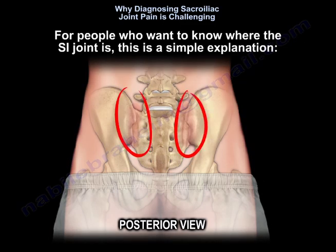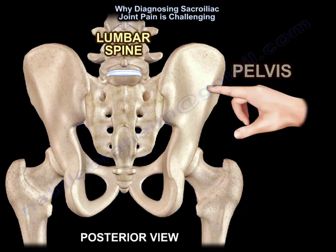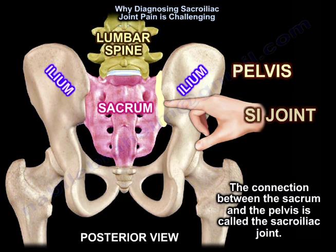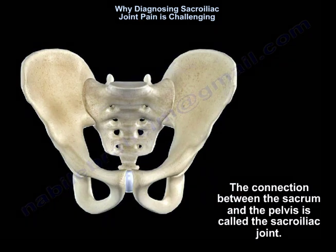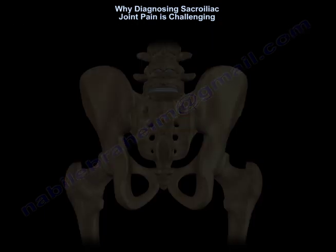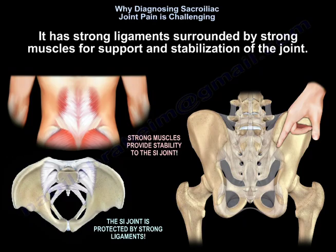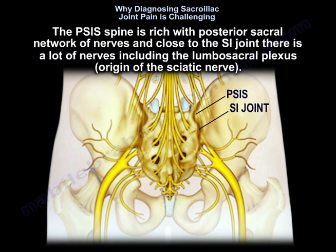For people that want to know where the sacroiliac joint is, here is a simple explanation. This is the spine. The lower part of the spine is called the sacrum, and this is the pelvis. The connection between the sacrum and the pelvis is called the sacroiliac joint. The sacroiliac joint has unique anatomical characteristics: the joint surfaces are irregular, it has strong ligaments surrounded by strong muscles for support and stabilization. The posterior superior iliac spine is rich with a posterior sacral network of nerves, and close to the sacroiliac joint there are many nerves including the lumbosacral plexus and the origin of the sciatic nerve.